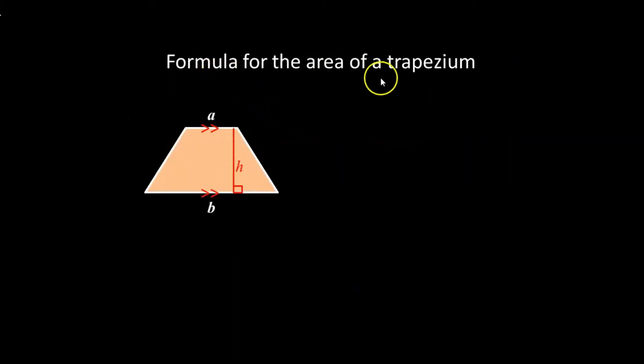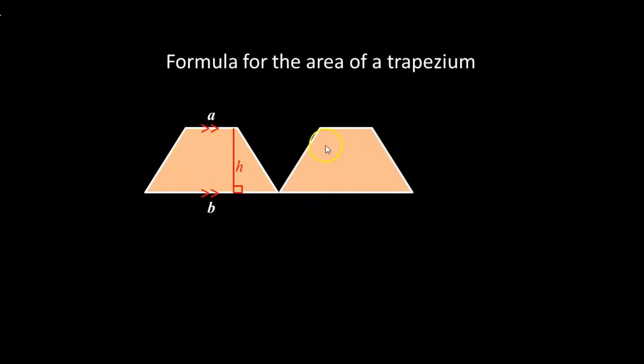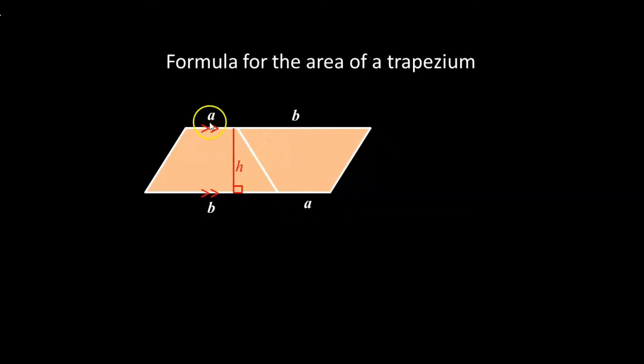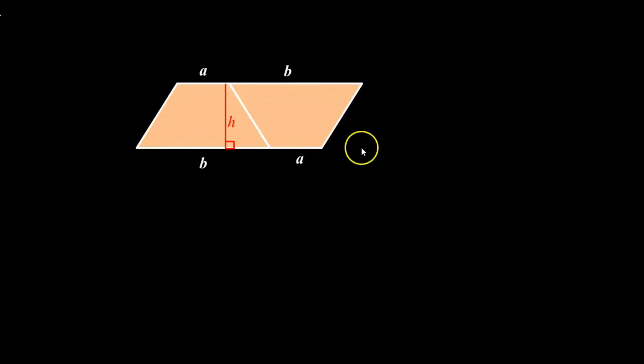Let us find the formula for the area of a trapezium. I'm going to demonstrate how to find the formula. I'll make a copy of this trapezium, flip it vertically upside down, and put them together. Side A has come down and side B has gone up. Remember, we need to find the area of this trapezium, but now we have two of the same trapeziums put together to make a new shape.